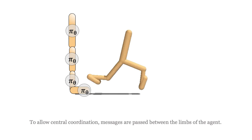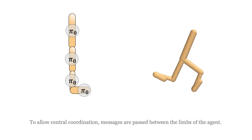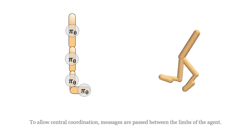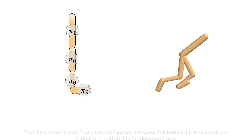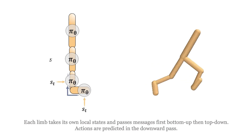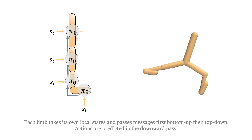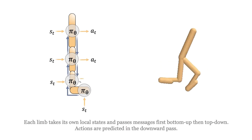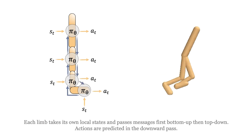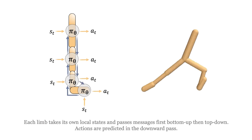To allow central coordination, messages are passed between the limbs of the agent. Each limb takes its own local states and passes messages, first bottom-up, then top-down. Actions are predicted in the downward pass.